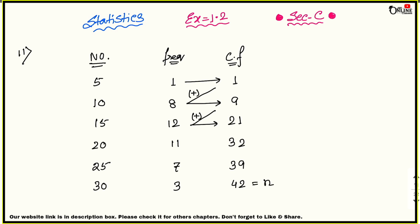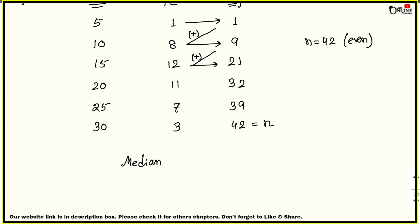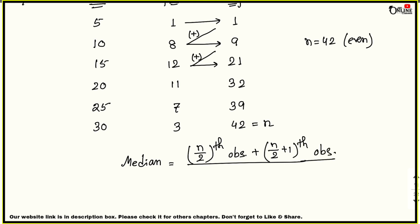So the last CF equals n, meaning n = 42. Now n can be even or odd. n means total number of observations. Here n = 42, which is an even number. For an even number we use the formula: Median = (n/2 th observation + (n/2 + 1)th observation) / 2.